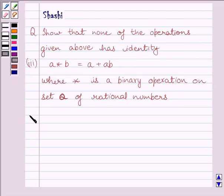Let us now start with the solution. On set Q, binary operation star is defined as A star B equals A plus AB.